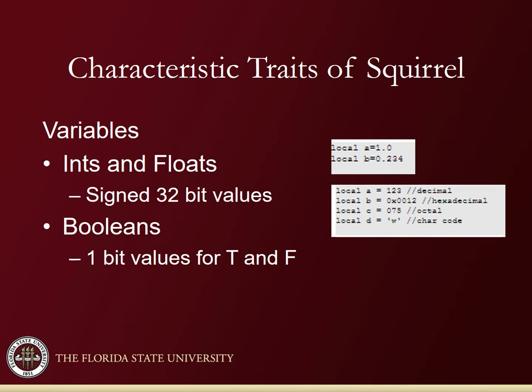The ints and floats are both signed 32-bit values; Squirrel does not have an unsigned version. Booleans are one-bit values for true and false.